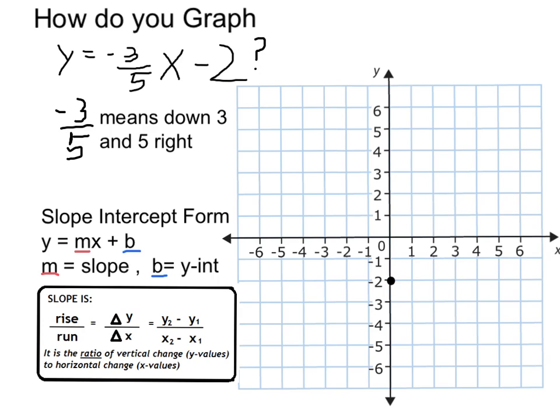So in this case, I go down 3 when I go over 5. So I can count that out from my point. To get to my next point, I go down 1, 2, 3, and over 1, 2, 3, 4, 5. I get the next point on the graph.